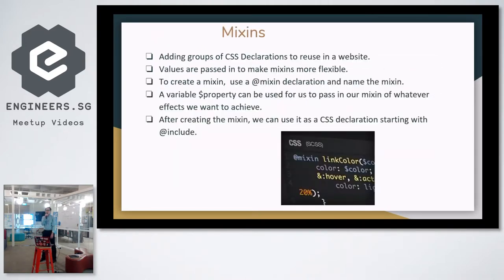So in terms of mixins, how do we use them? Mixins are groups of CSS declarations to be reused in a website. Values are passed in to make mixins more flexible. To create a mixin, we use a @mixin declaration and name the mixin. A variable property can be used to pass in whatever effects we want to achieve. After creating the mixin, we can use it as a CSS declaration starting with @include — for example, we can include a certain color, a certain variable, or a certain feature.